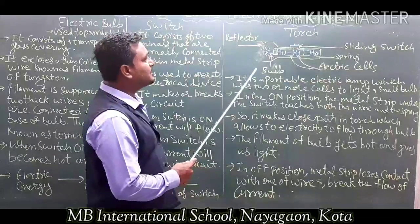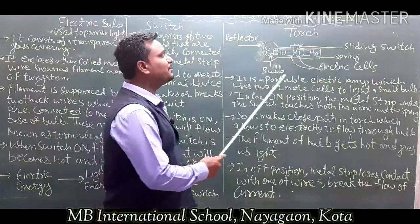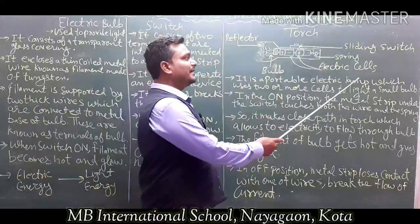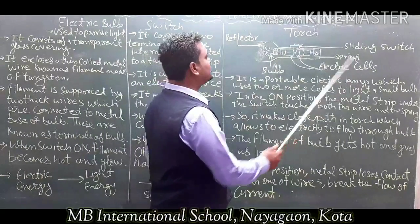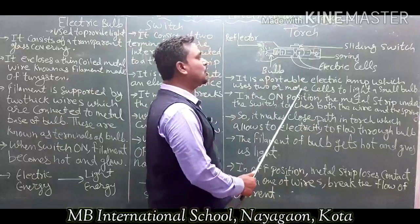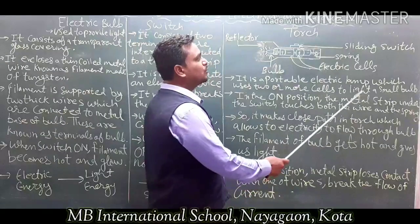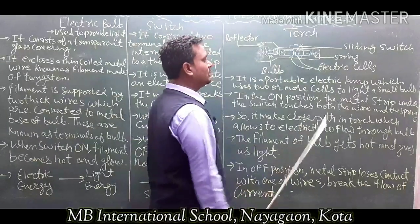A torch is a portable electric lamp which uses two or more cells to light a small bulb.